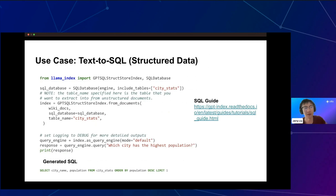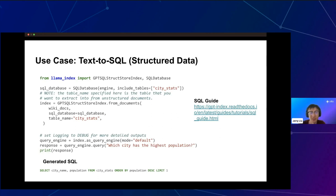We also offer text-to-SQL support over structured data. We have an index defined over structured data within our SQL index, which consists of two main components. First, conversion from unstructured data into structured data points — on the data ingestion side, you can ingest unstructured documents and load them into a database. Second, once you have structured data within a database, we offer a strong text-to-SQL interface over this data. You can do default text-to-SQL, which takes in table schemas and uses the LLM to infer SQL statements from the natural language query. You can also add text annotations or context on top of tables, and store table schemas in an index to deal with large table volumes.